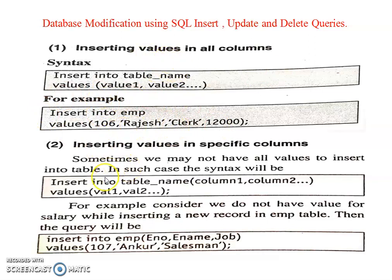Now we discuss inserting value in a specific column. Sometimes we may not have all values to insert into a table. In such a case we use the syntax: INSERT INTO table_name (column1, column2) VALUES (...). For example, consider we do not have a value for salary while inserting a new record in the employee table.